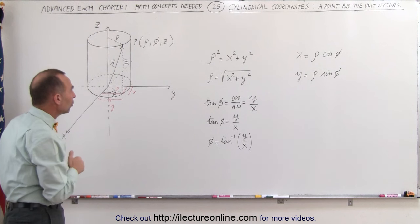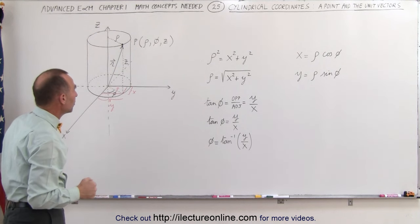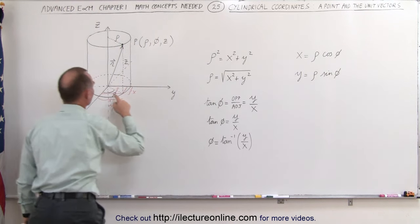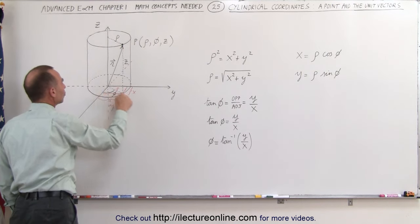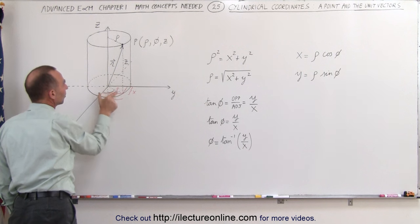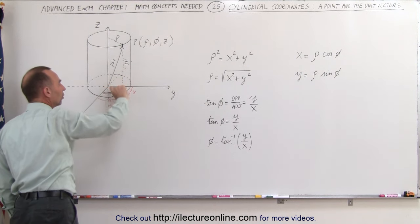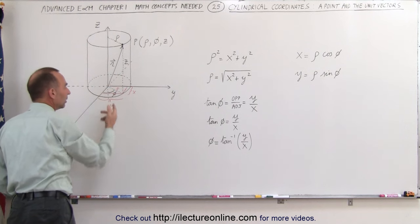Relating that to the Cartesian coordinate system, to the XYZ coordinate system, you can see that rho squared is equal to x squared plus y squared, because this is simply a triangle. This here would be x, this here would be y, this here would be the hypotenuse rho. So ρ² = x² + y².